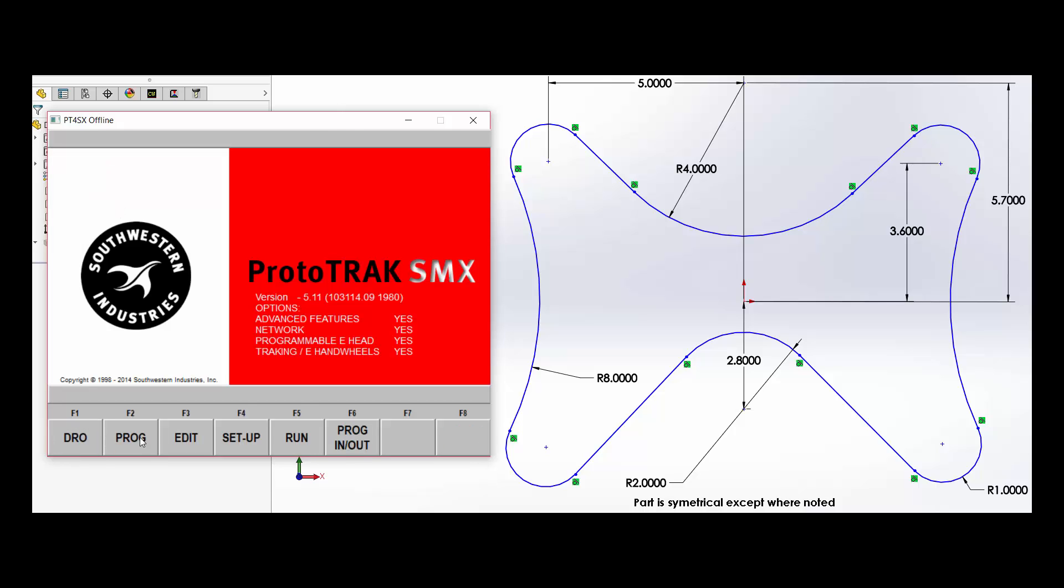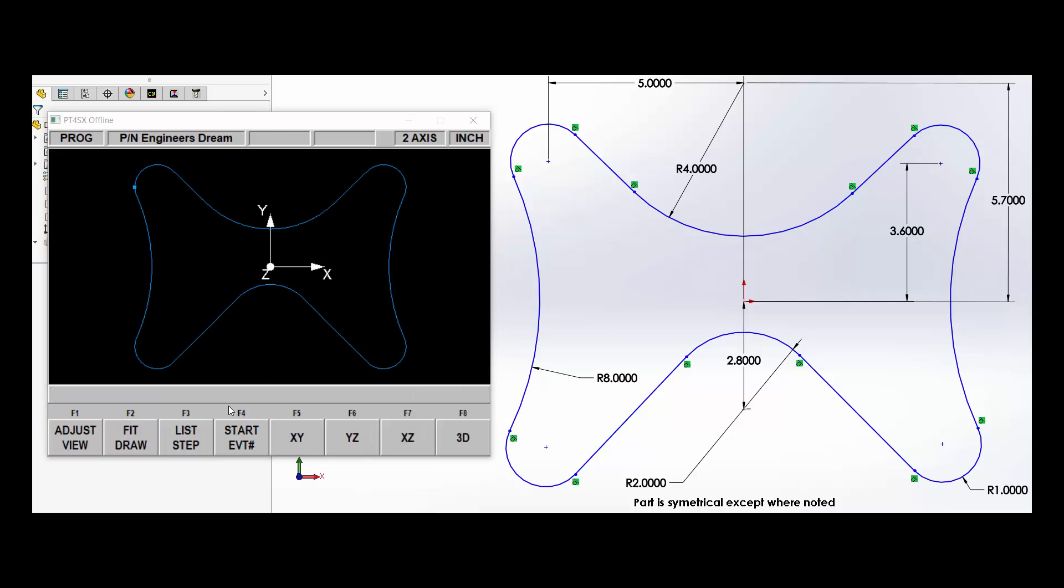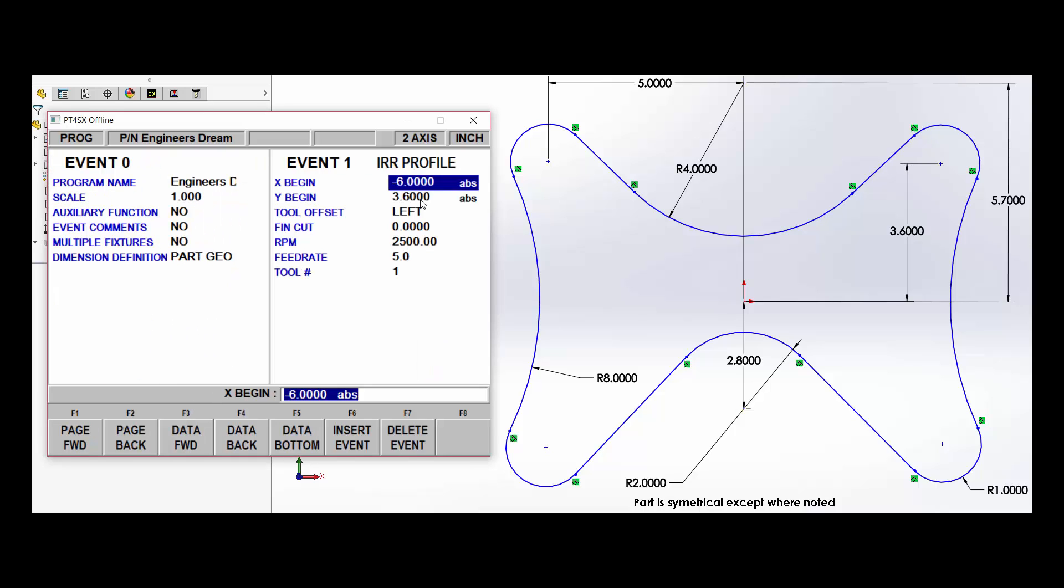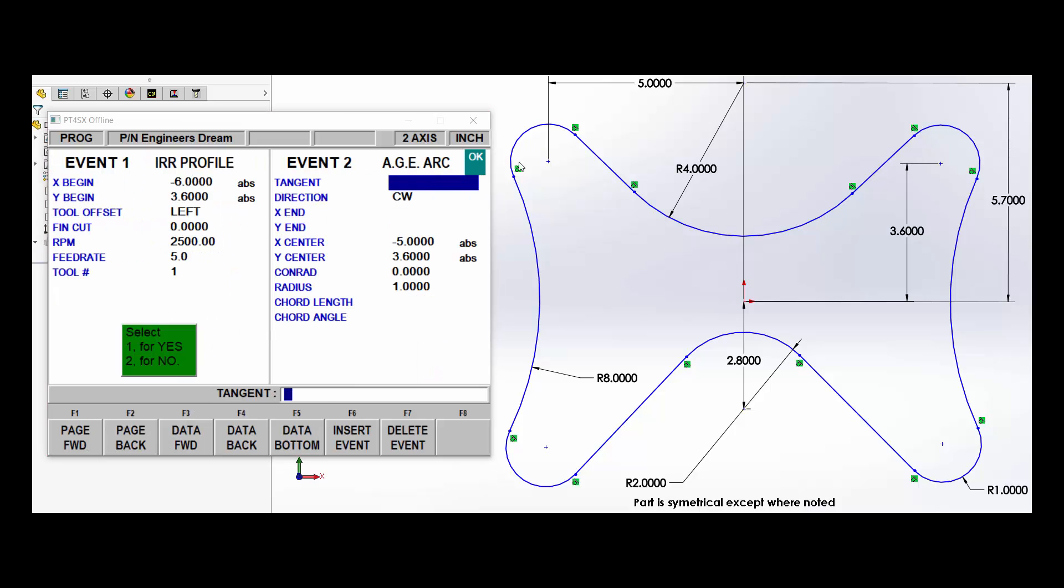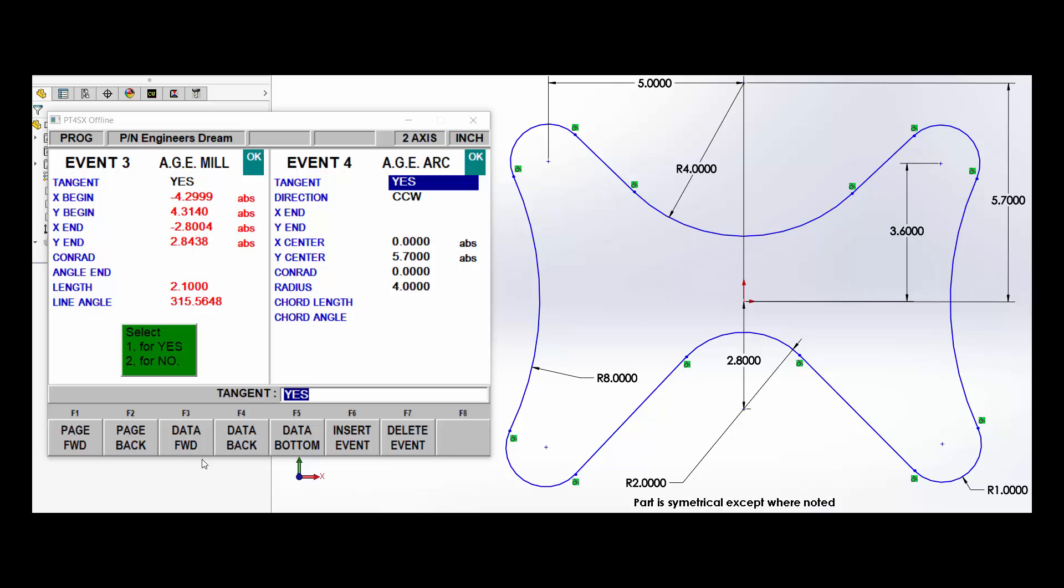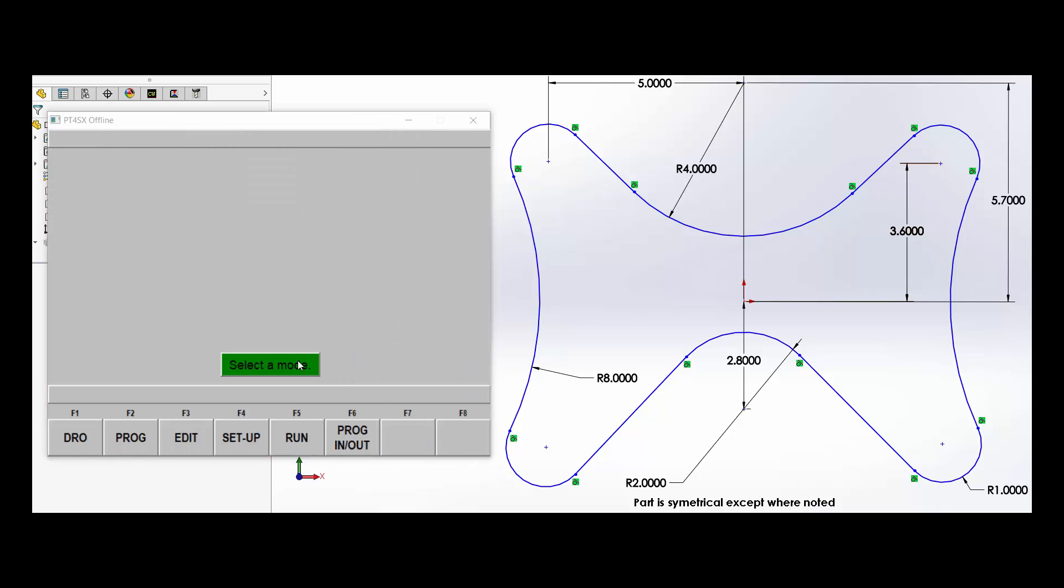And if we go through these steps here, we can see I'm starting on this one inch radius, and then I had that tangent mill move. You notice the end points are left open because not required on the ProtoTRAK, into the four inch radius, up into the tangent mill move, into the one inch radius and so on. So the part is there, it's programmed.